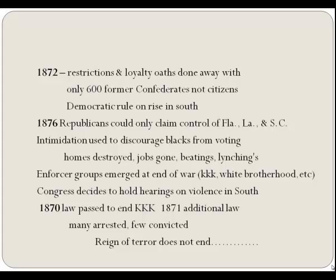By 1872, all restrictions and loyalty oaths had been removed—only about 600 ex-Confederates still lacked their citizenship—and the Democrats were ruling the South. By 1876, Republicans could only claim control of Florida, Louisiana, and South Carolina; elsewhere Democrats were in control. They were using intimidation to discourage Blacks from voting: destroying homes, ostracizing people, making jobs disappear, beating or lynching people at night.